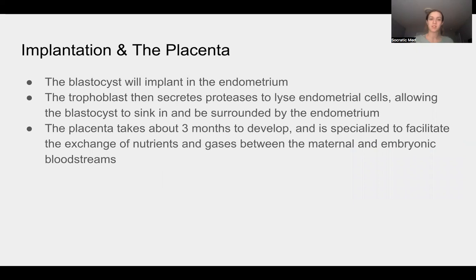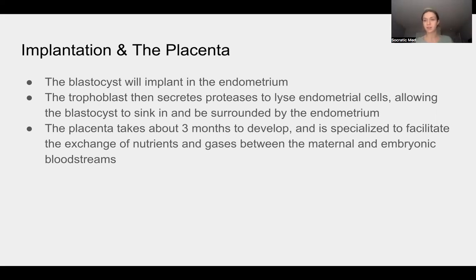For implantation, the blastocyst will implant in the endometrium. The trophoblast — the outer layer of cells — will secrete proteases which lyse endometrial cells, allowing the blastocyst to sink down into the endometrium and be surrounded by it. The placenta takes about three months to develop and is a specialized organ that facilitates the exchange of nutrients and gases between the maternal and embryonic bloodstreams. Much of what we covered will be discussed in more depth during the reproductive system lecture — think of this as an introduction to embryonic development.